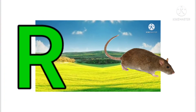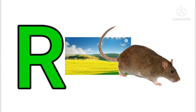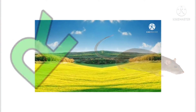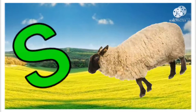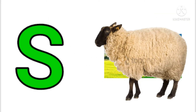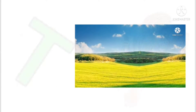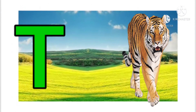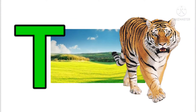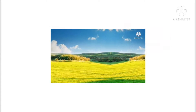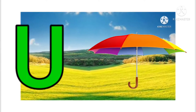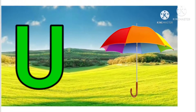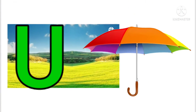R for red, S for sheep, T for tiger, U for umbrella.